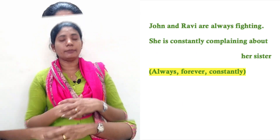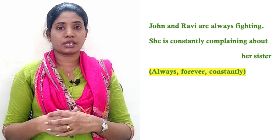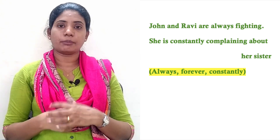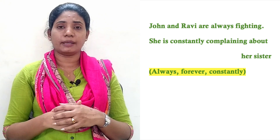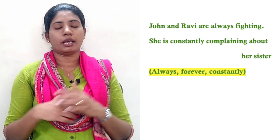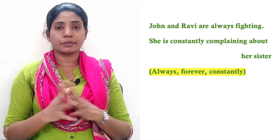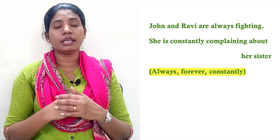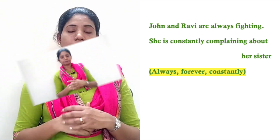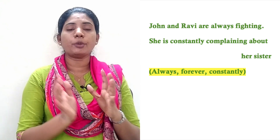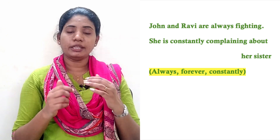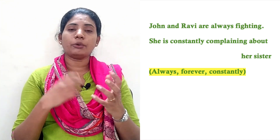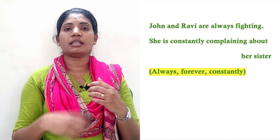This is the third rule: Present Continuous Tense can also be used to describe actions that are being repeated. For example, 'John and Revy are always fighting.' They are always fighting — it is a repeated action. Another example: 'She is constantly complaining about her sister.' Words like 'always' and 'constantly' signal repeated actions in Present Continuous Tense.